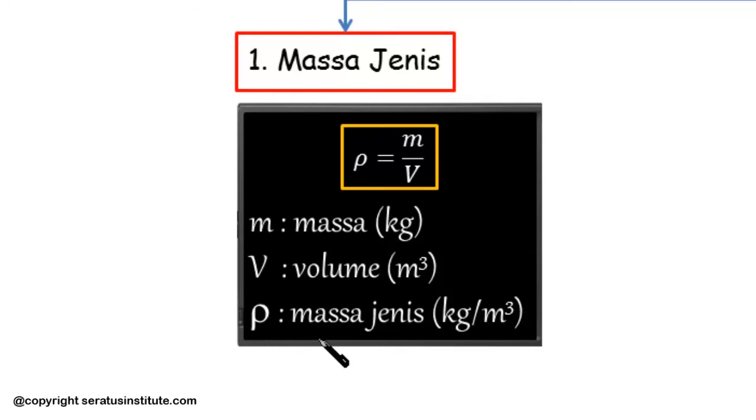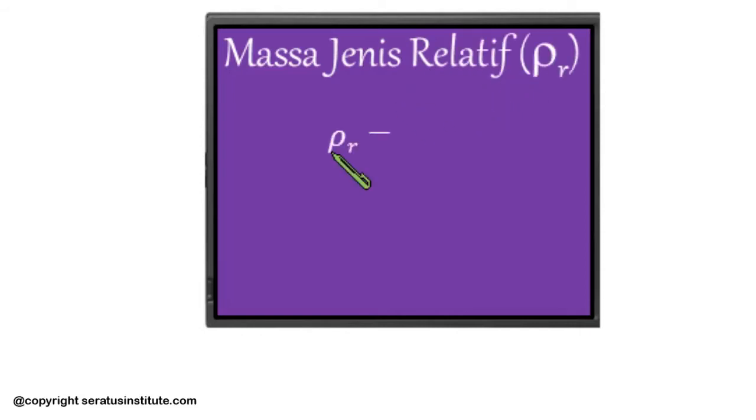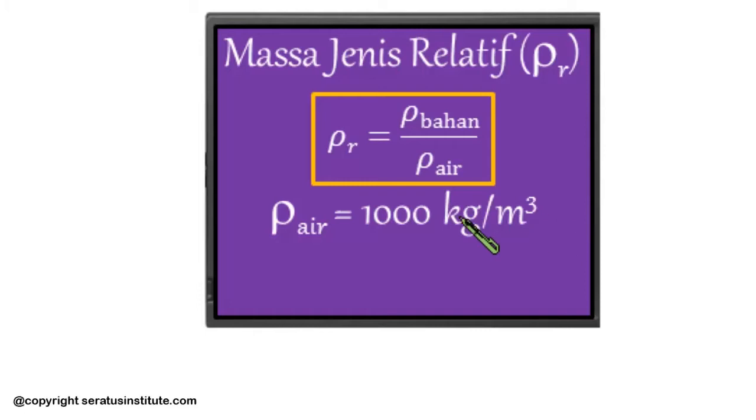The second is relative density, symbolized as rho R. Relative density rho R equals rho of the material compared with rho of water. It's always compared with the density of water because water is very dominant on Earth at 70%. Even in our bodies, 70% consists of water. Water is very important, so we need to know the density of water. Water's density is 1000 kilograms per cubic meter, or in CGS units is 1 gram per cubic centimeter. Because relative density is rho per rho, relative density has no units.